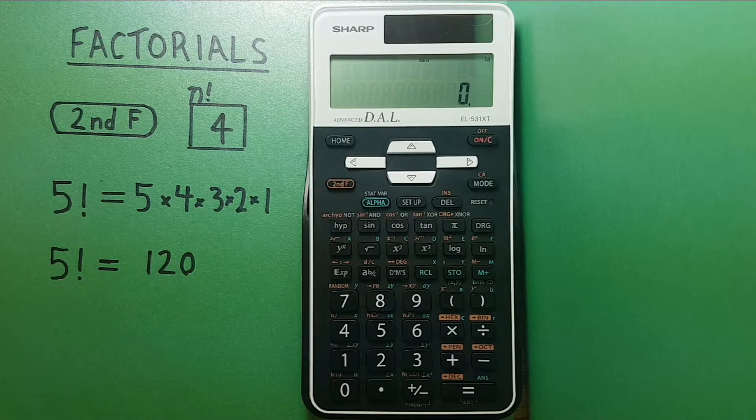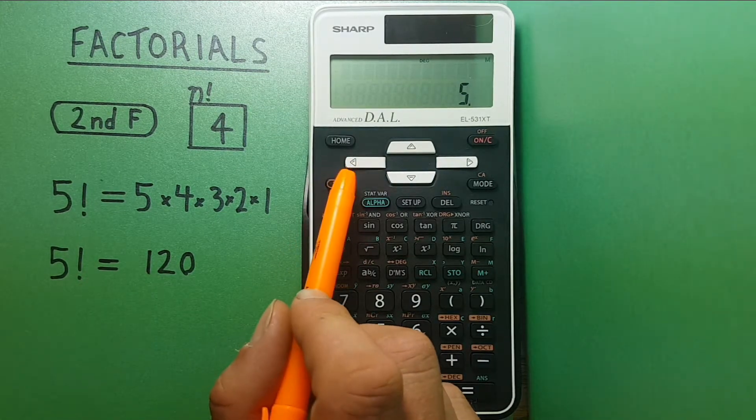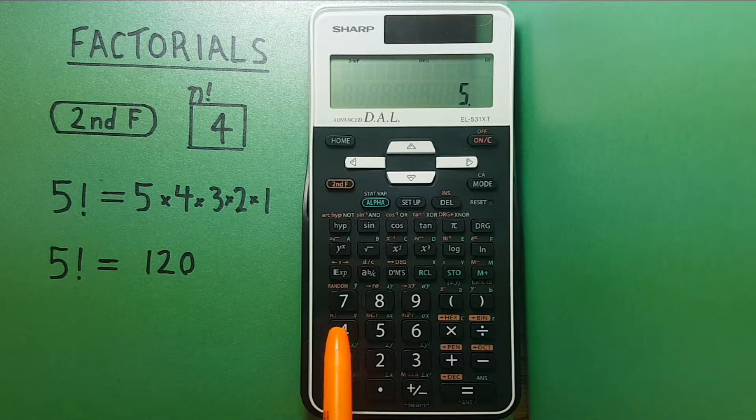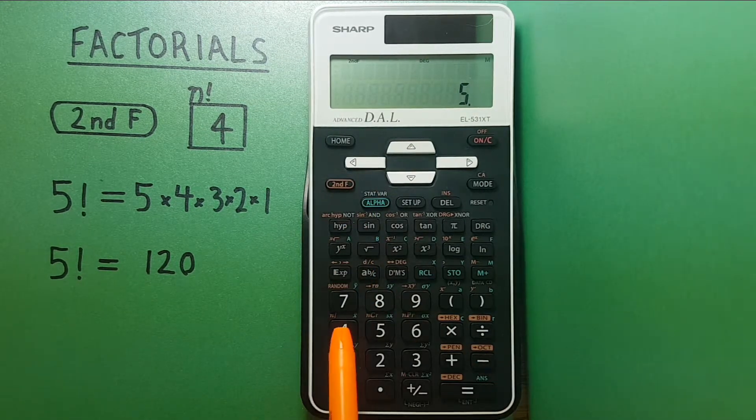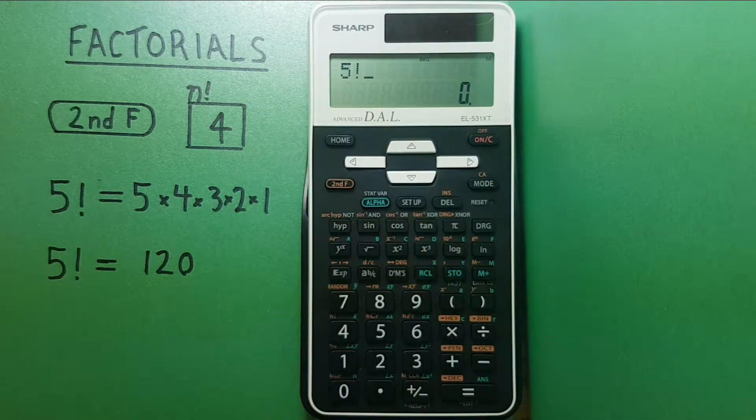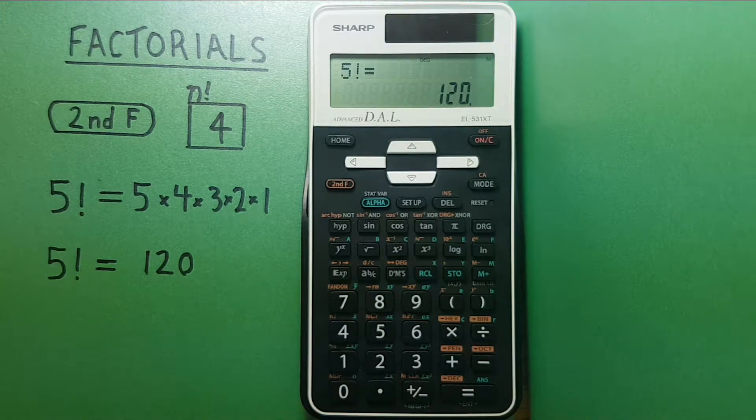To do this we enter the number and then the second function and then the 4. Since we're using second function we get the factorial. You can see the exclamation mark there and then equals. And you can see we get 120 which is the correct answer.